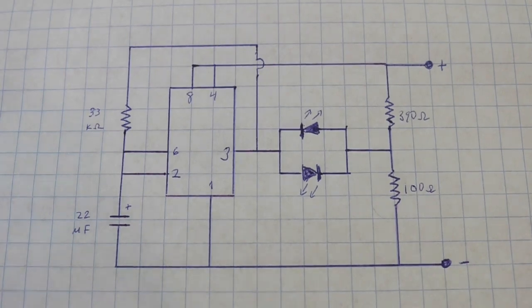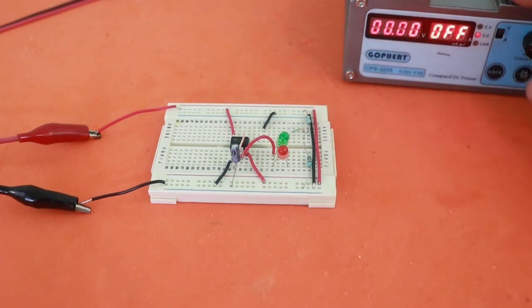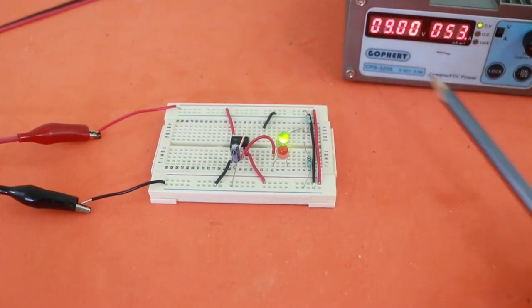Let's now see it working. Okay, let me turn on my power supply. 9 volts, and you can see the two LEDs alternating.